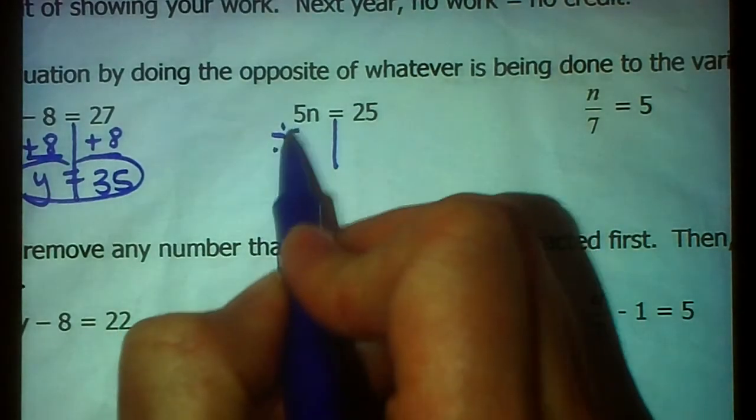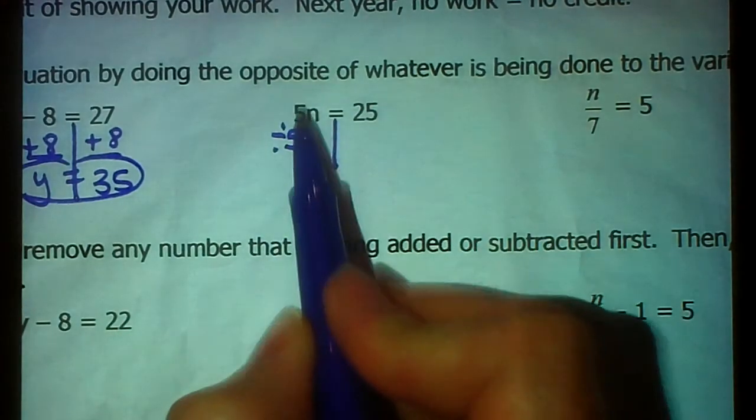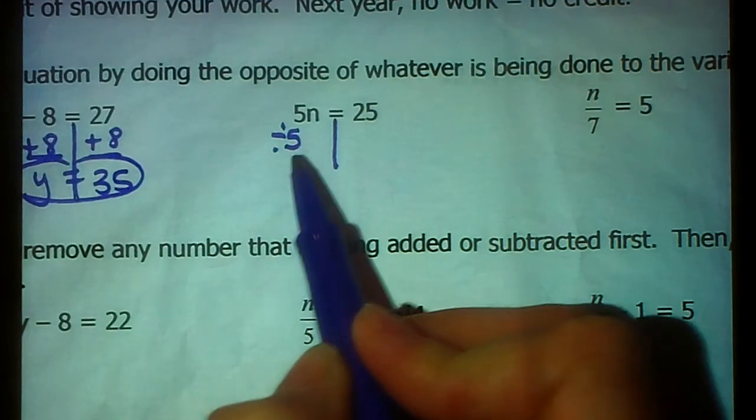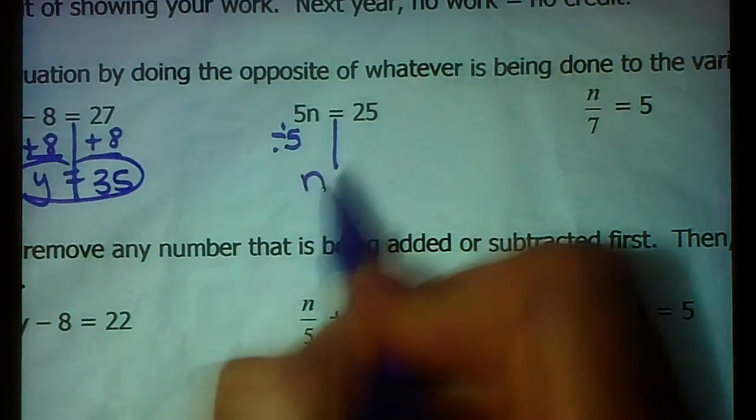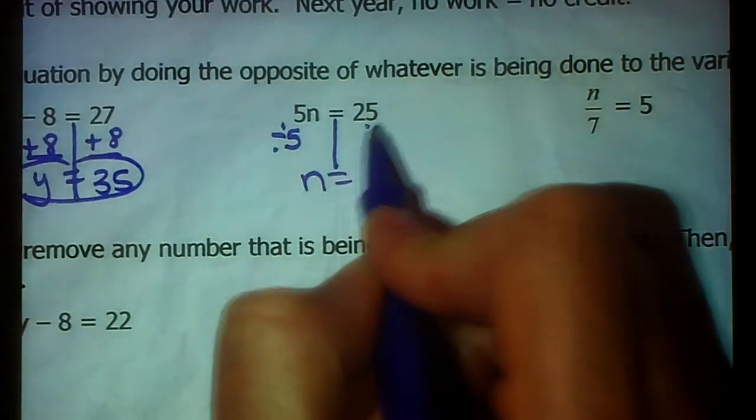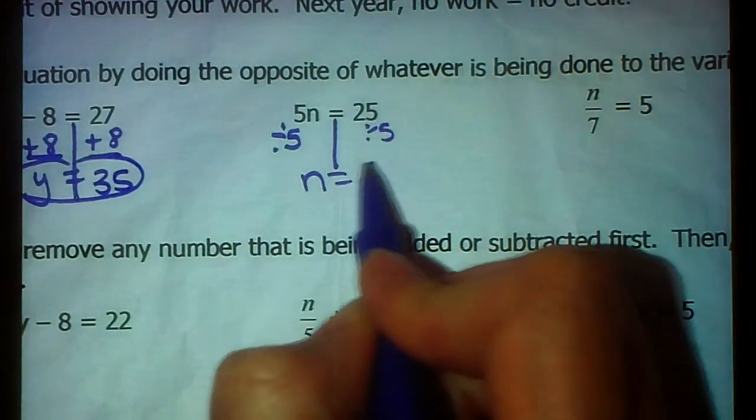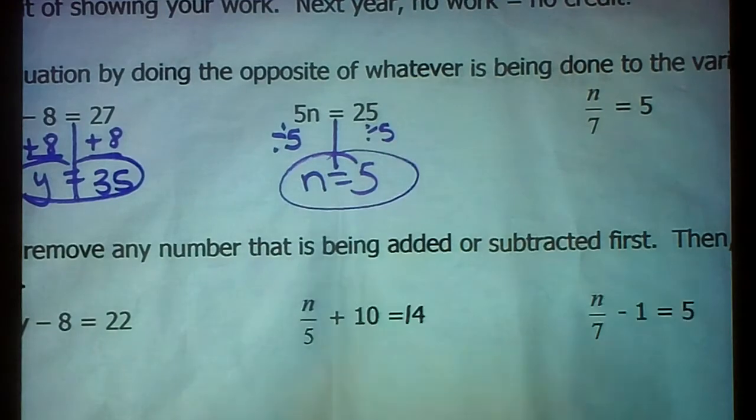So, the opposite of multiplying by five. I'm going to divide this side by five, and by doing that, I end up with five divided by five, which makes one N, which is the exact same thing as just plain old N. So I'm going to do the same thing over here. Twenty-five divided by five is five. So N equals five.